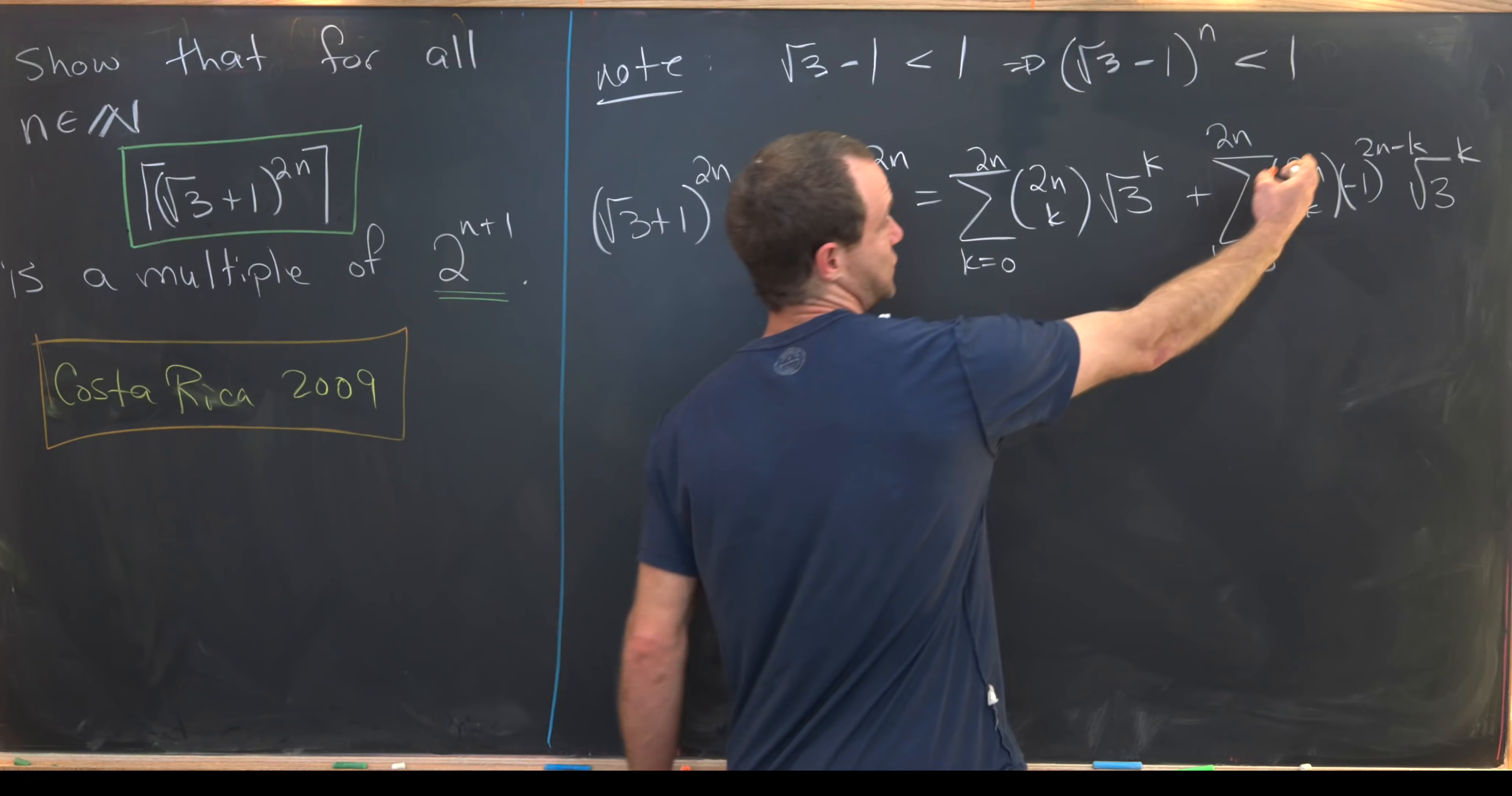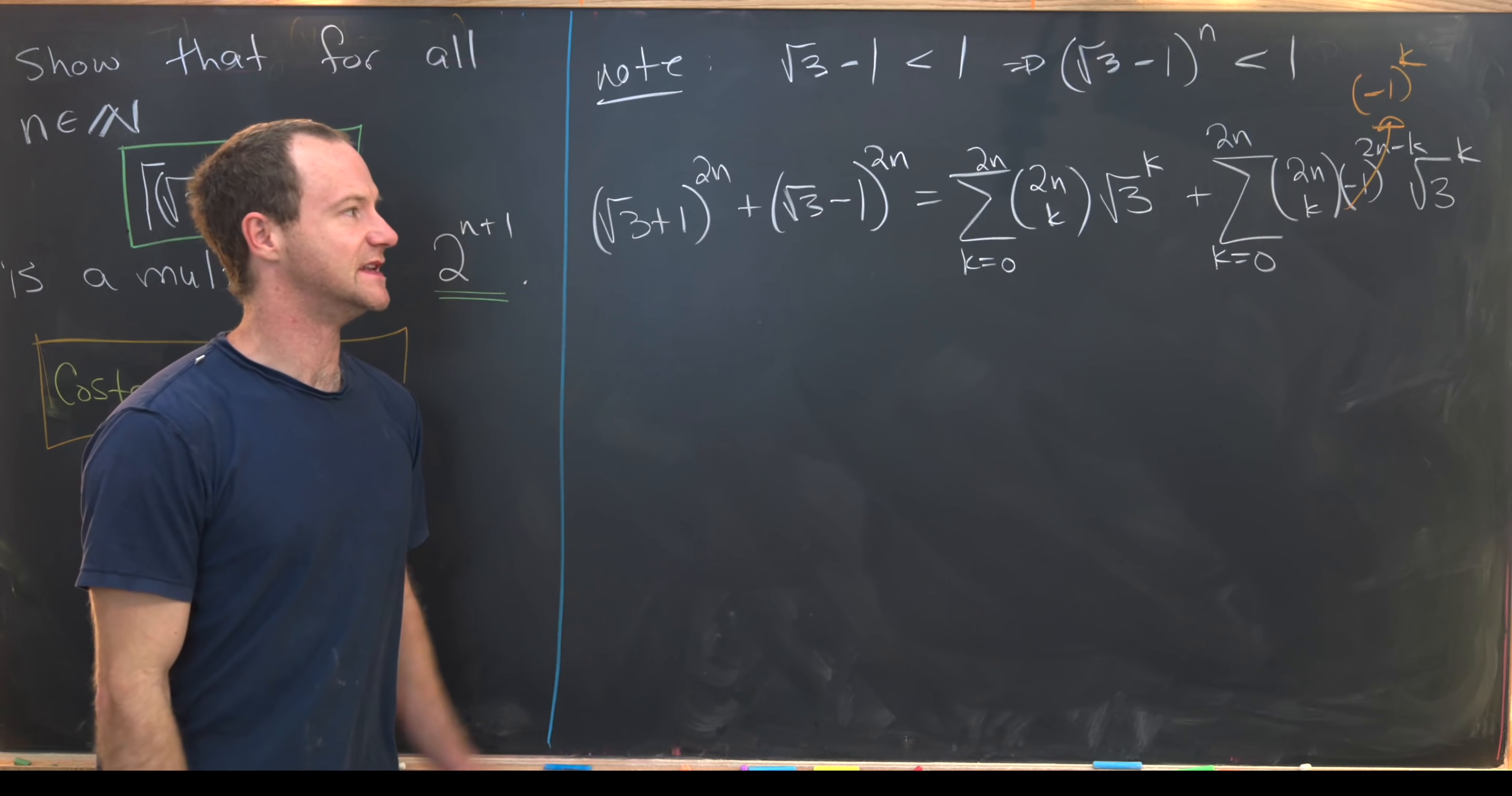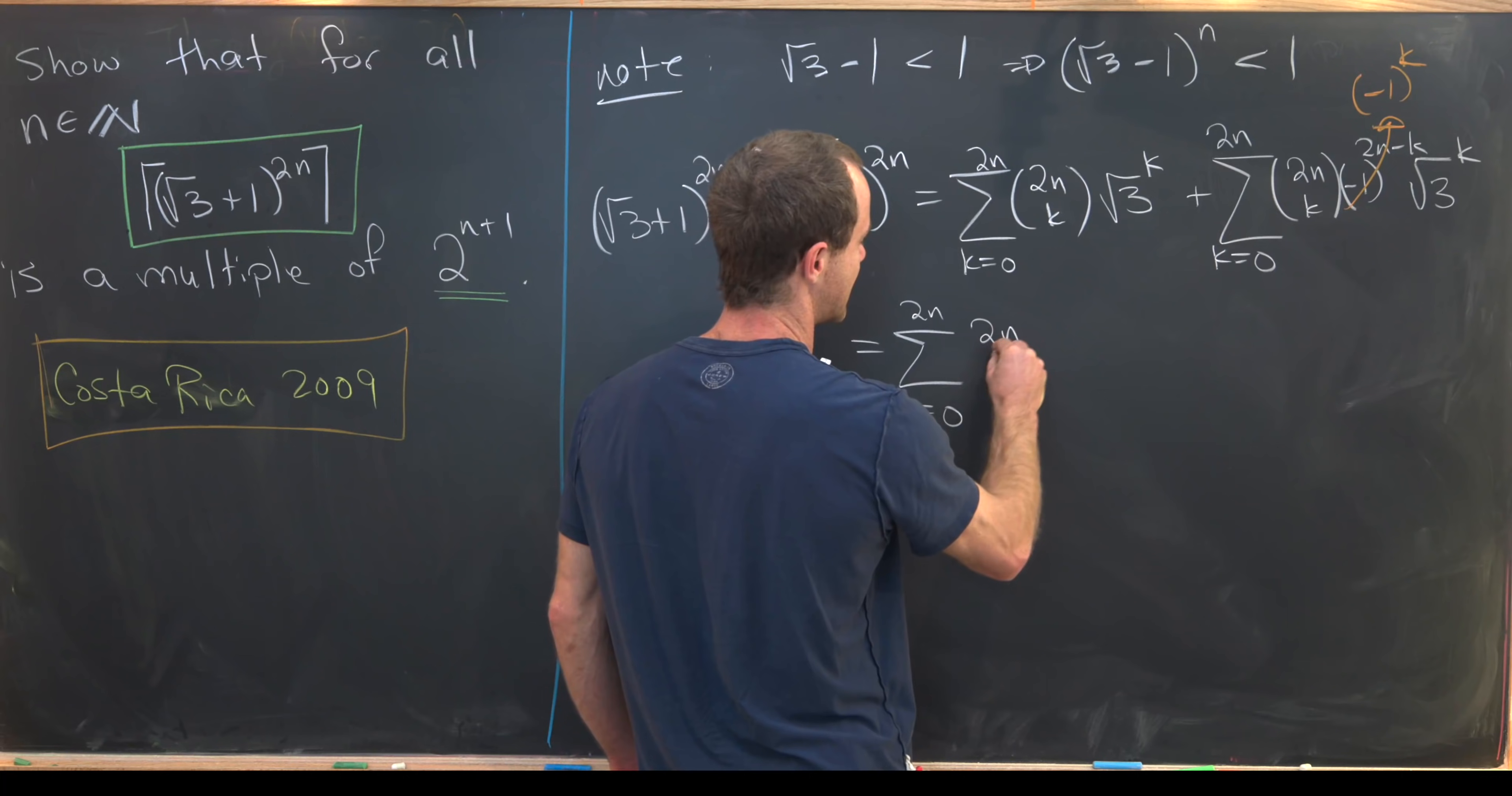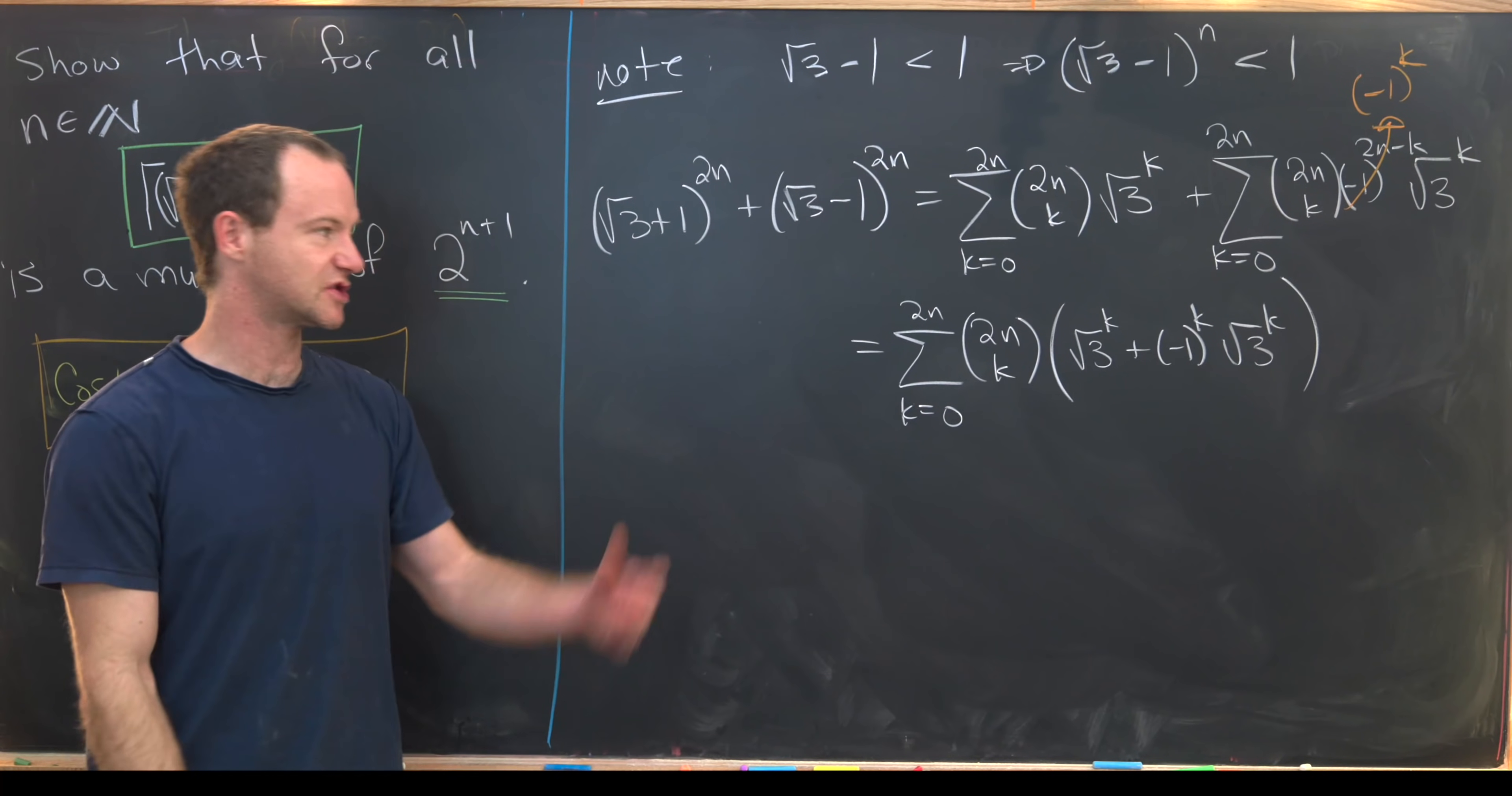But next we'll notice that 2n is obviously even. So minus 1 to the 2n minus k is the same thing as minus 1 to the k. That really gives us a nice way to push these sums together. So now we've got this is the sum as k goes from 0 up to 2n of 2n choose k times square root of 3 to the k plus minus 1 to the k times another square root of 3 to the k. So that's just pushing those together.